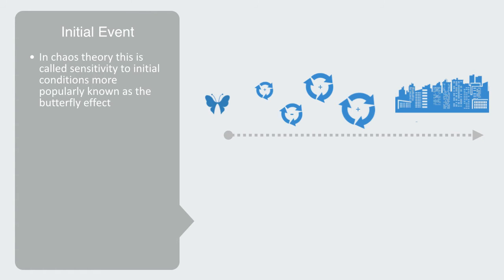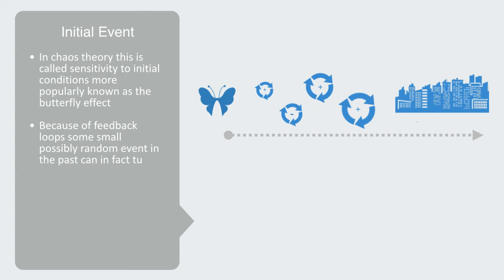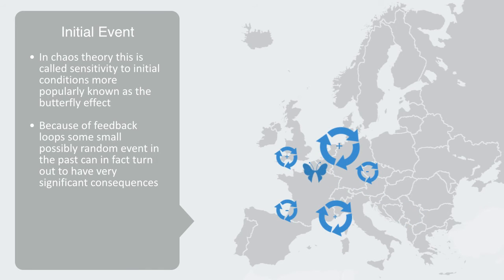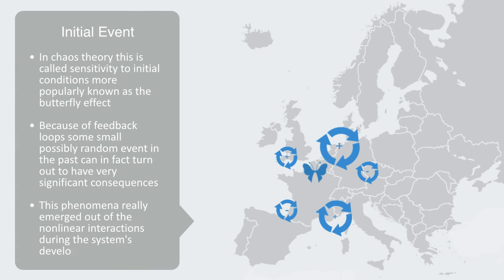More popularly, sensitivity to initial conditions is known as the butterfly effect. Because of feedback loops, some small, possibly random event in the past can in fact turn out to have very significant consequences in the present or future, and we cannot predict this process a priori — we have to run or simulate the system in order to understand its future state. An example of this might be the initiation of the First World War through a relatively small event in Bosnia. There was no way of knowing that this small event would lead to a world war and the reshaping of Europe's borders, because this phenomenon emerged out of the non-linear interactions during the system's development.